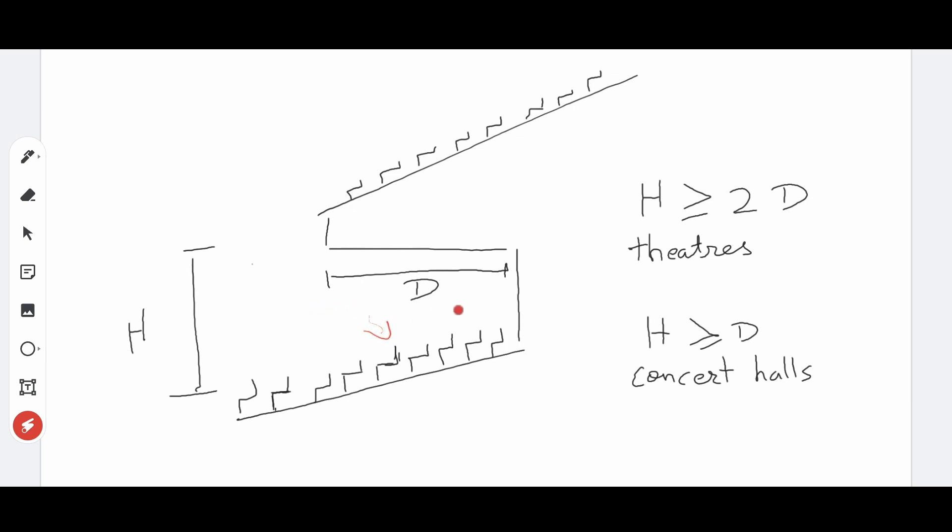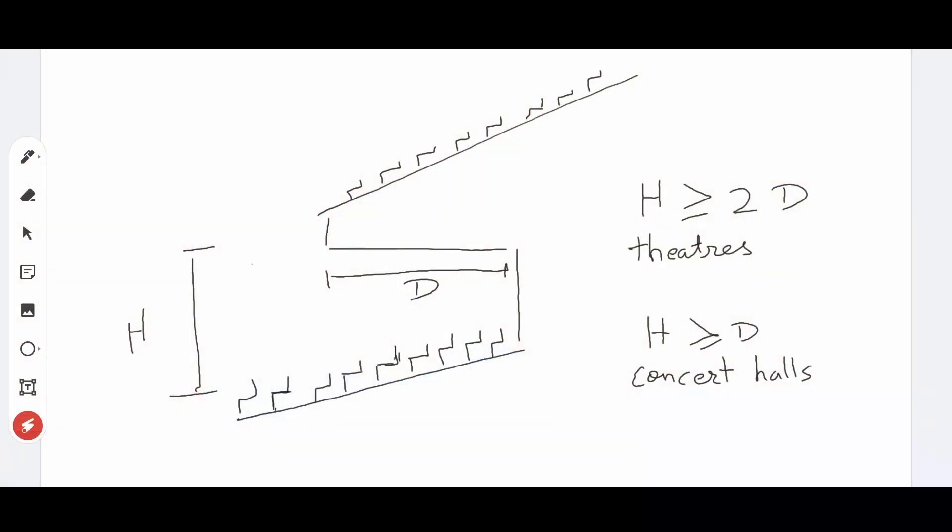This energy if too low creates a dead sounding space and hence it is a problem for listeners especially in the case of musical performances. Best way to deal with this is to simulate reverberation but a general rule of thumb can be to have the height greater than or equal to twice the depth for theatres and greater than or equal to the depth for concert halls.